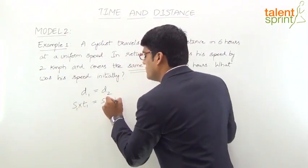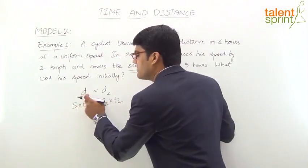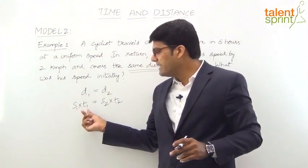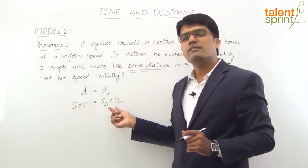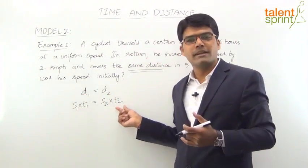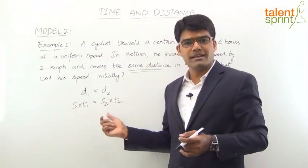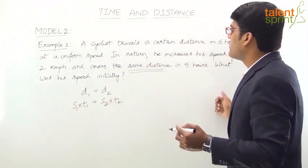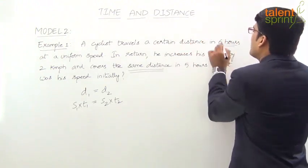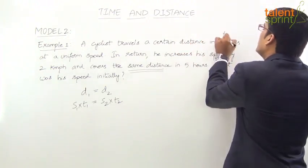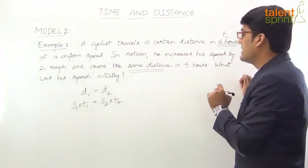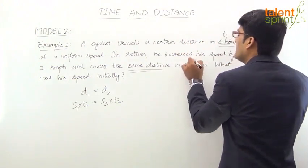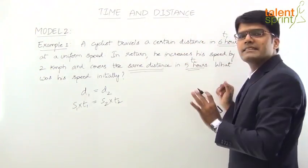This is case number 1 and this is case number 2. We have initial speed and initial time, then new speed and new time. T1 is the time taken in the first case — 6 hours. And in the return journey, the distance is covered in 5 hours, so T2 is 5 hours.